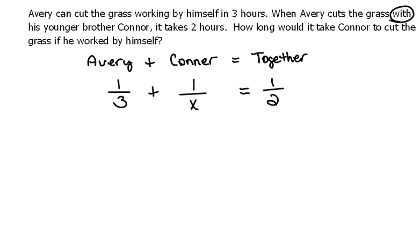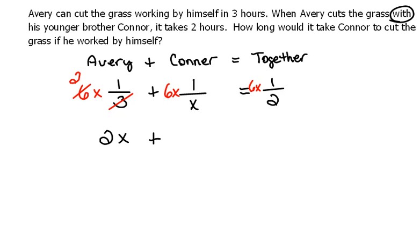We're going to get a common denominator here, which would be 6X, and we're going to multiply that to every single term. When we multiply the first term, 3 will go into 6 two times, so we have 2 times X. When we multiply the second term, X will cancel, so we have 6 times 1 which is 6. On the right-hand side, 2 will go into 6 three times, so we have 3 times X, plus 1 times 1, which gives us 3X.